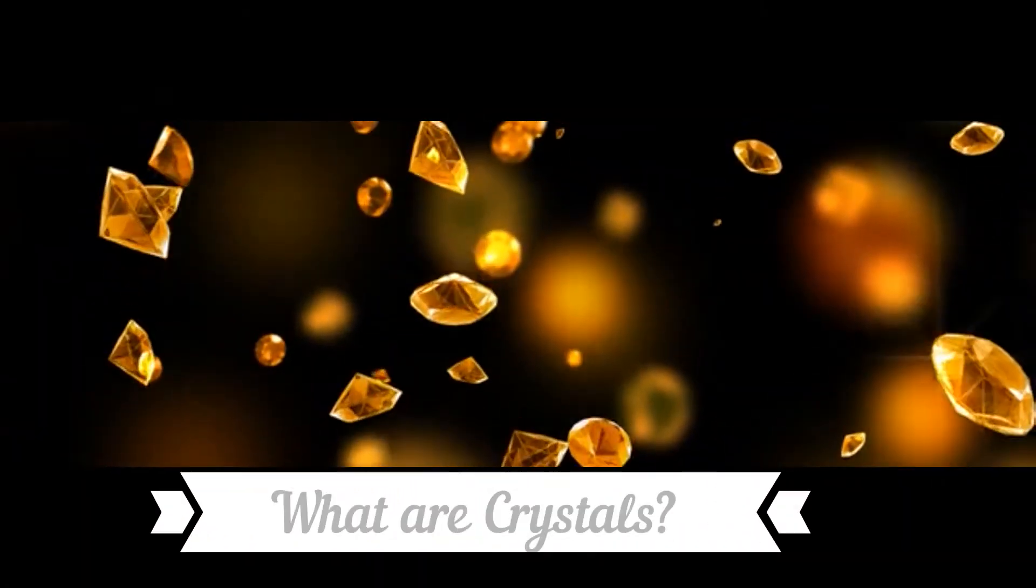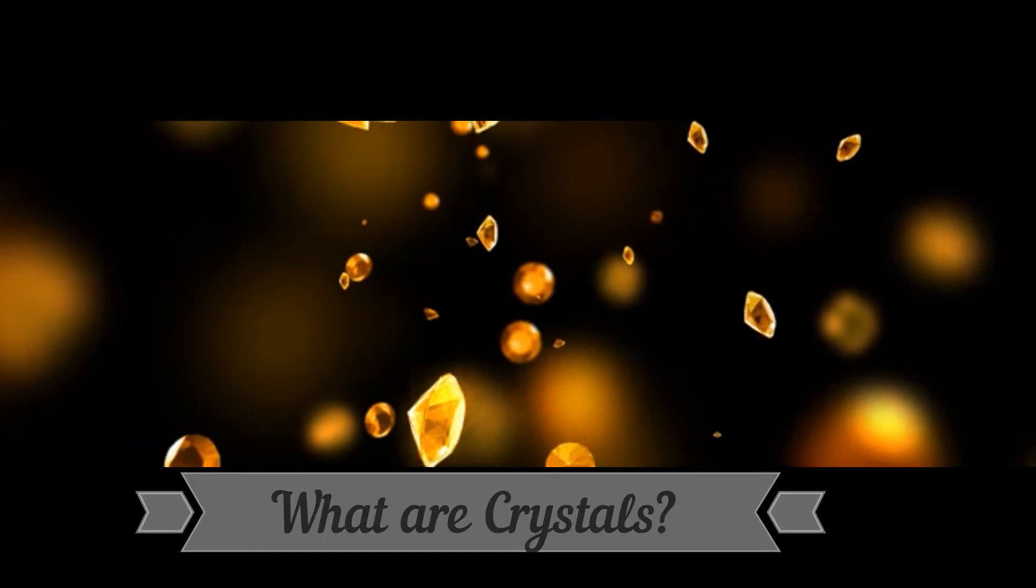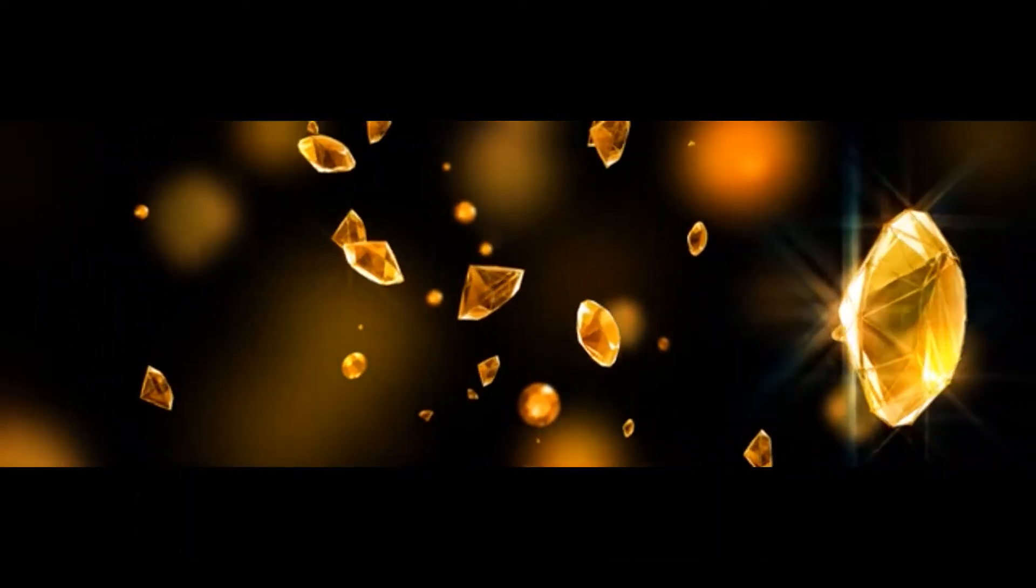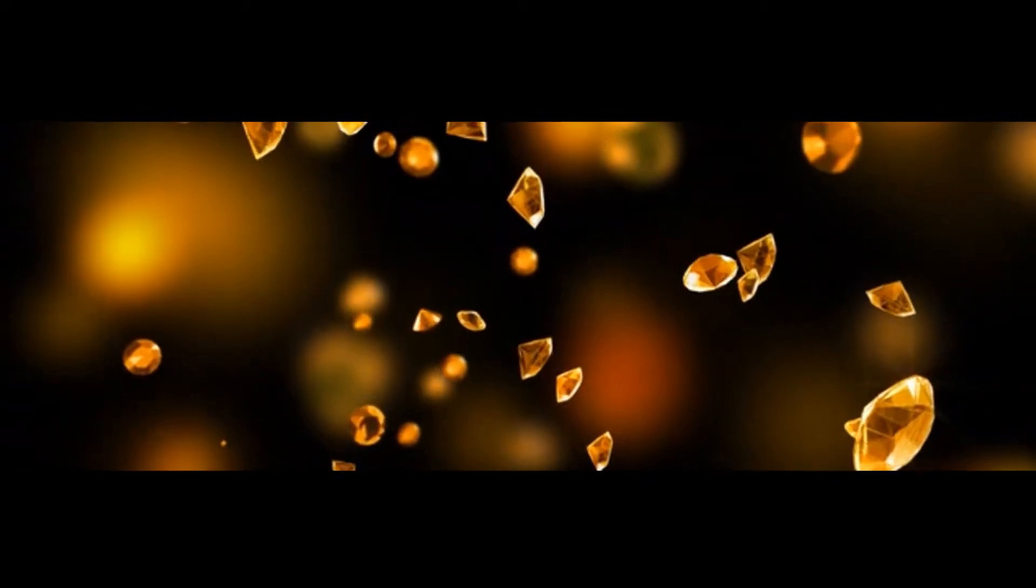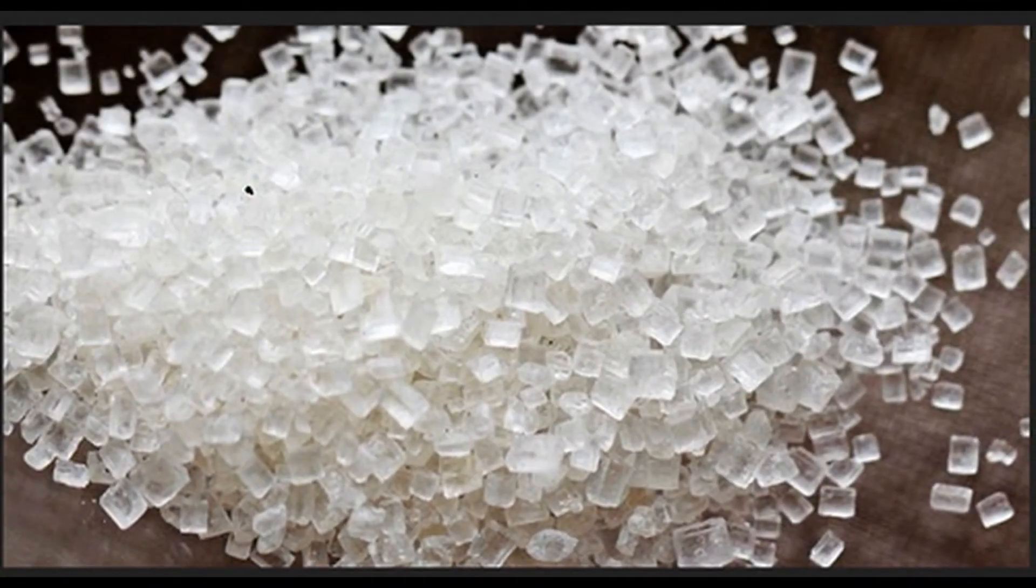What are crystals? The molecules of certain solid substances display a special property. They are arranged in a uniform geometrical pattern that repeats itself to create unique shapes. Such solids are called crystals. For example, sugar and copper sulphate are crystals. You can observe sugar crystals using a magnifying glass.